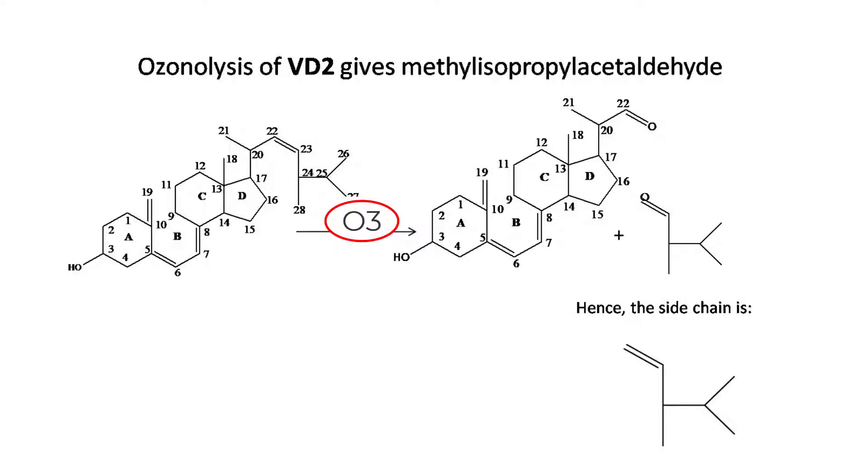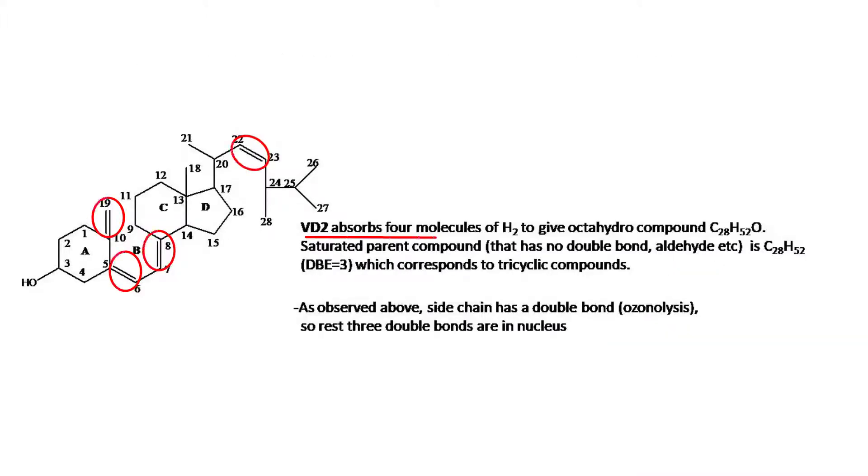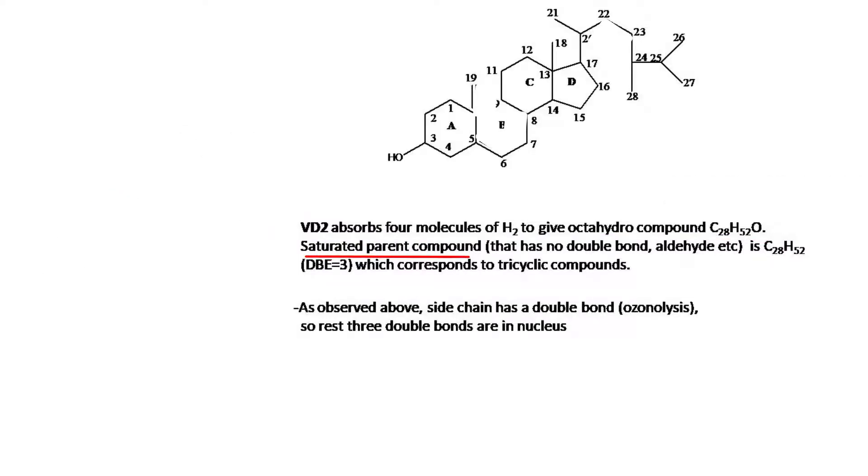Ozonolysis of vitamin D2 gives methyl isopropyl acetaldehyde. This indicates the side chain structure. Vitamin D2 absorbs four molecules of H2 to give an octahydro compound C28H52O.